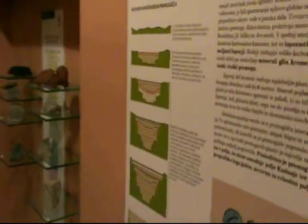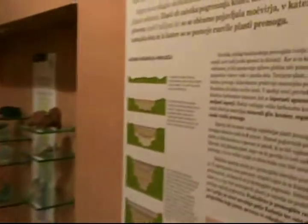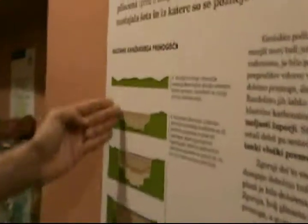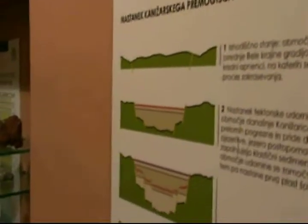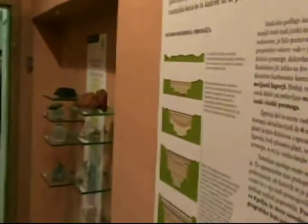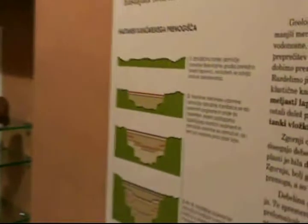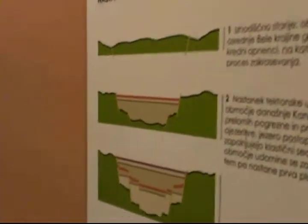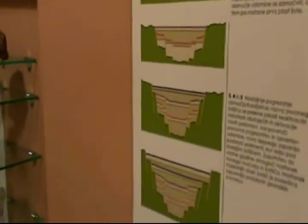Here we can see the formation of the Kaniželica basin. It was formed around normal faults which lowered the surface and formed a lake which covered this area. This lake had very high bioproduction and the sediments inside were very fine.